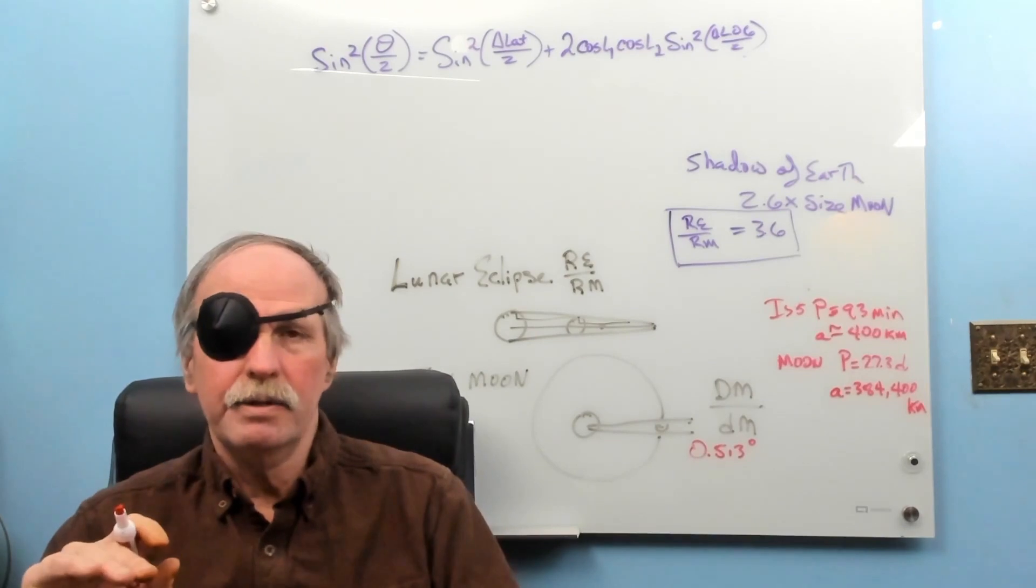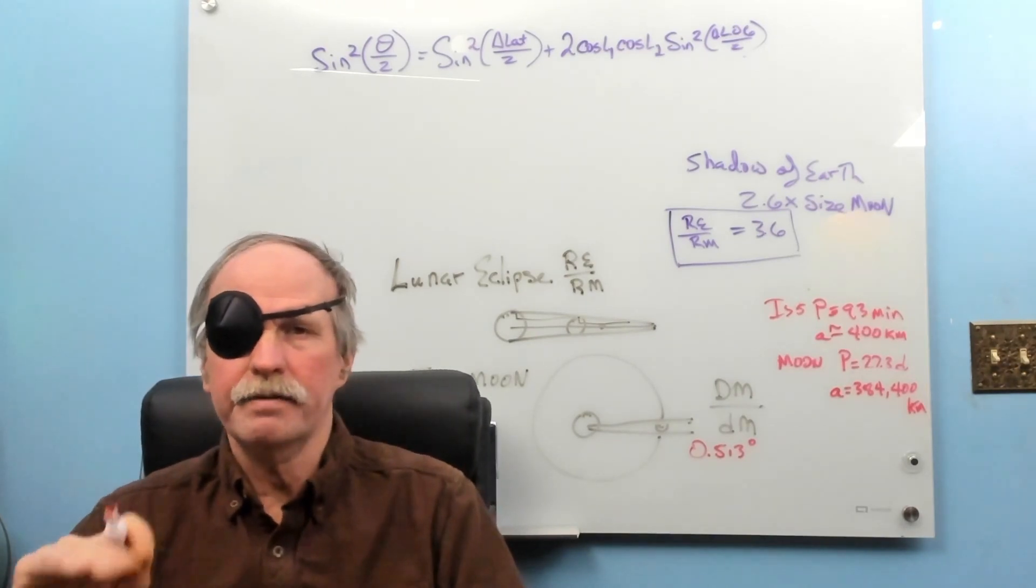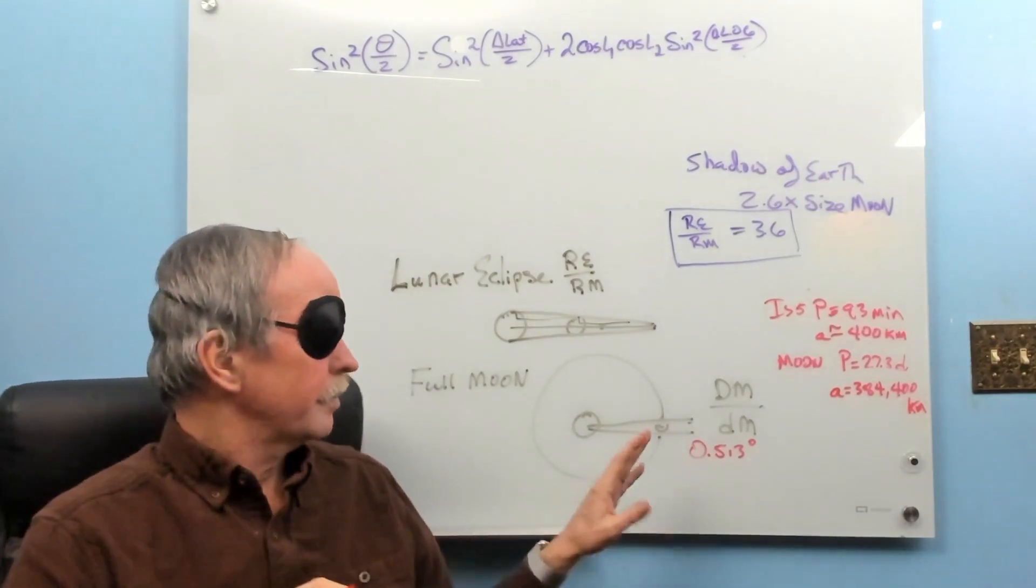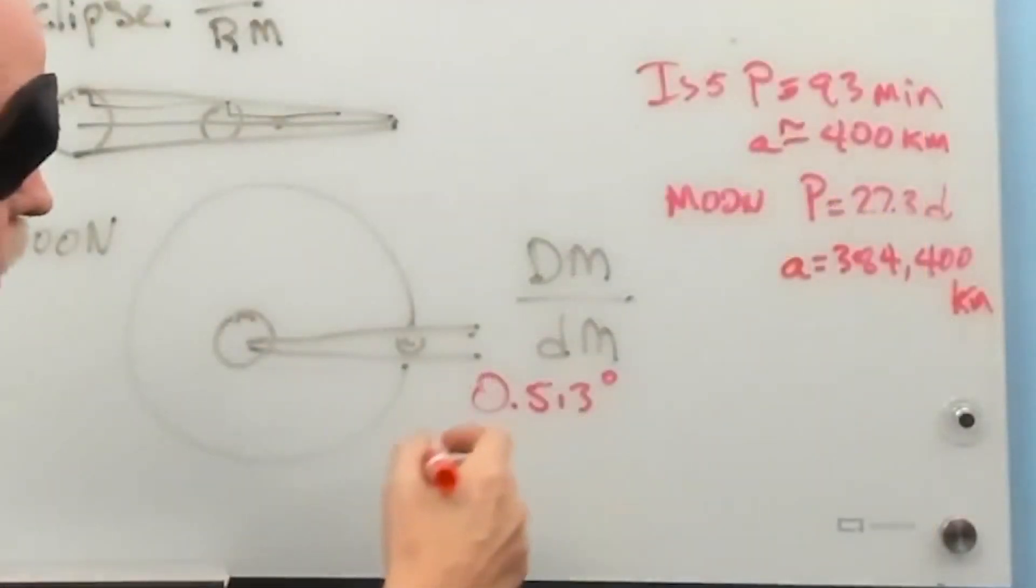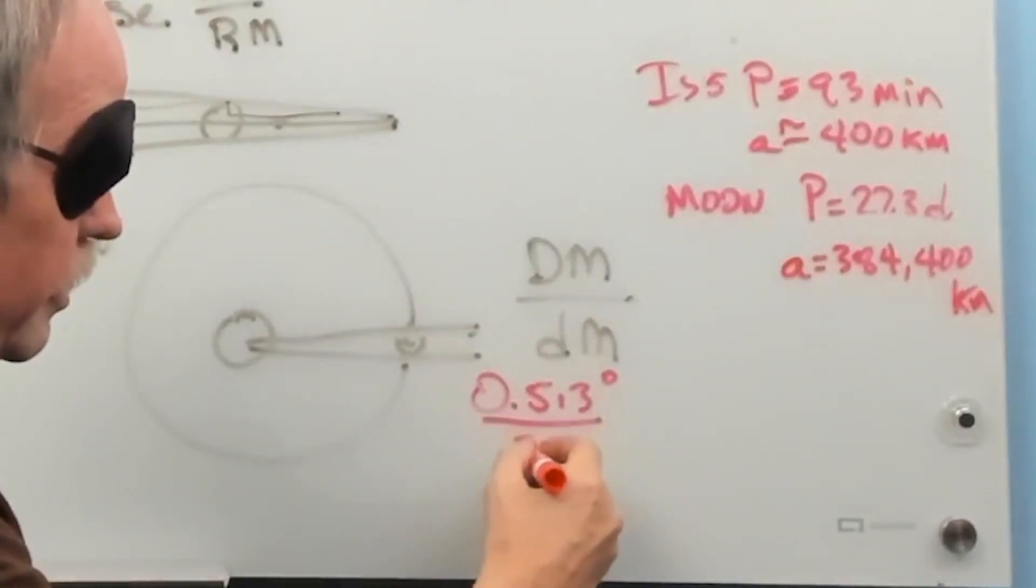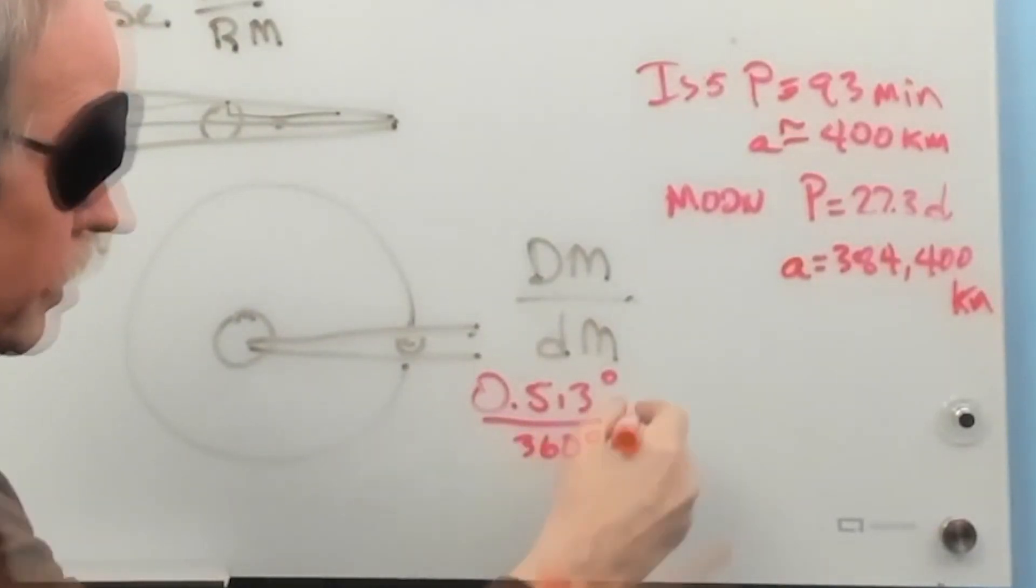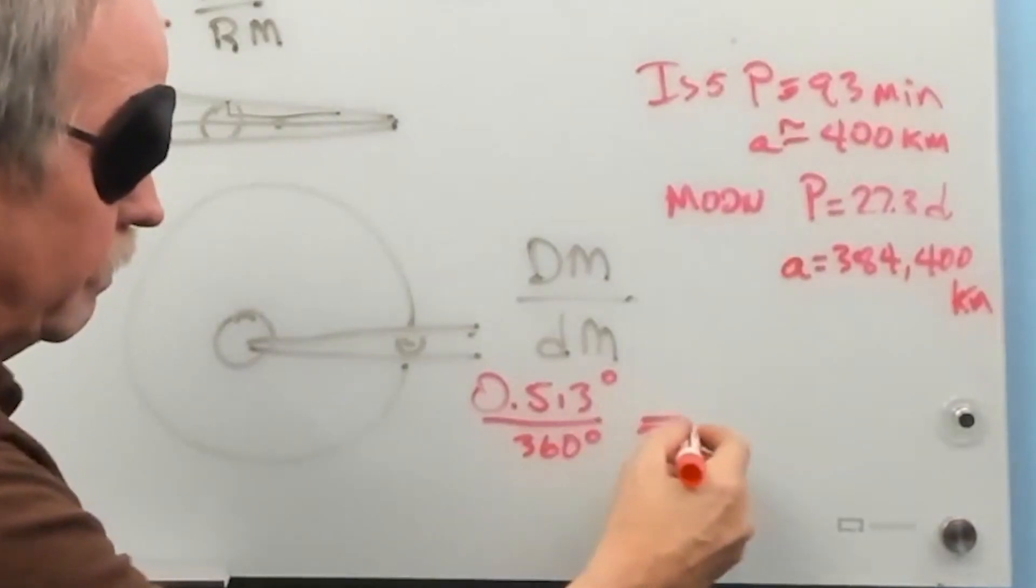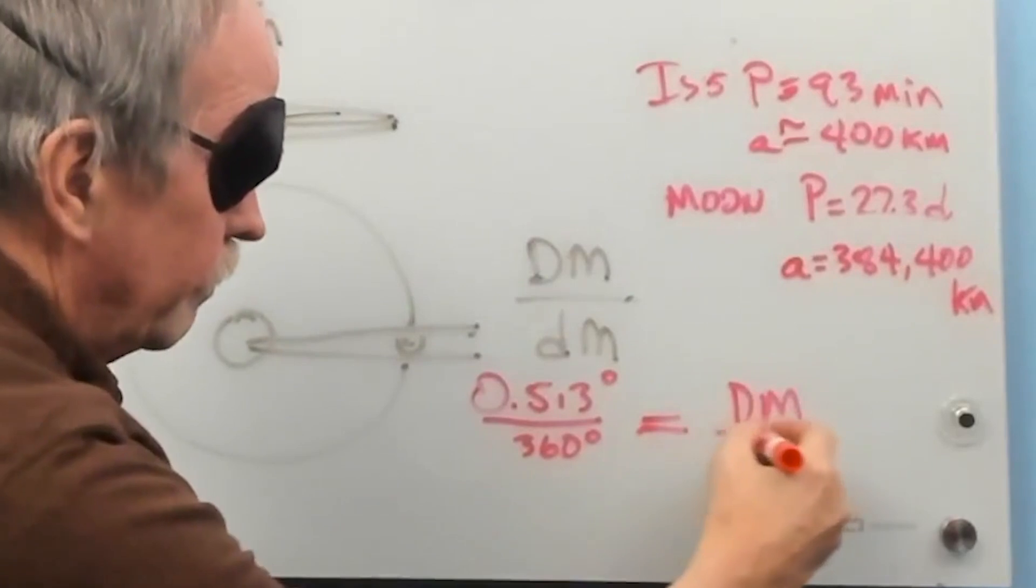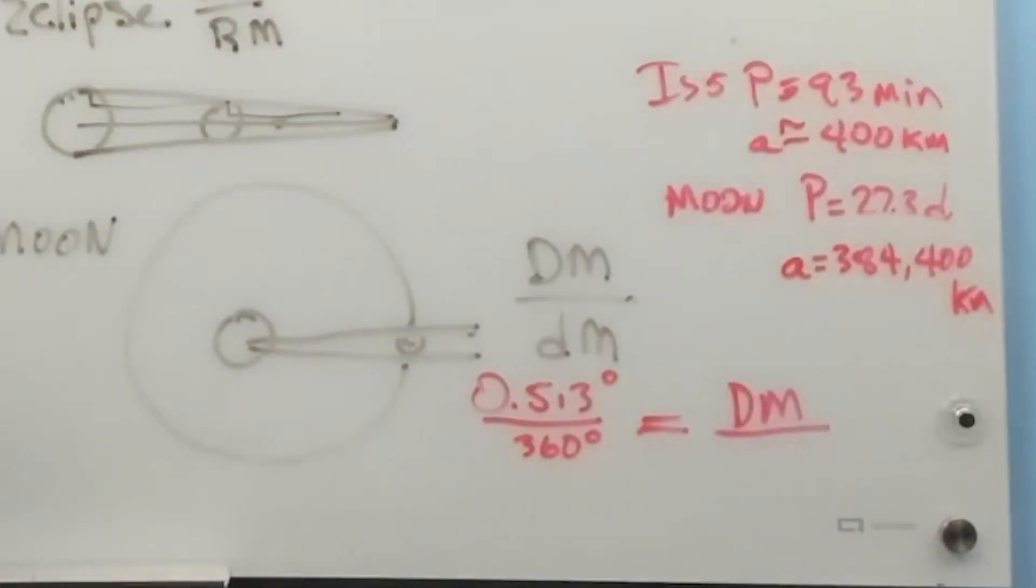They're a fascinating look at the sophistication of the geometry of the ancient Greeks. But today, I would like to go over this second observation. If you look at the angular size of the Moon, which is 0.513 degrees, and divide that into 360 degrees, that will be equal to the diameter of the Moon over what? The orbit of the Moon.